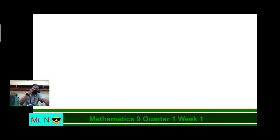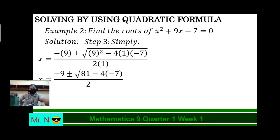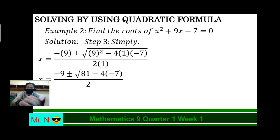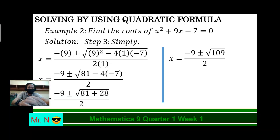Now in step number 3, we're going to simplify it. So, negative 9 plus or minus — 9 squared is 81, and negative 4 times 1 is negative 4, times negative 7, all over 2 times 1 is 2. Simplify further: we just multiplied negative 4 by negative 7, and that is positive 28. So we have negative 9 plus or minus square root of 81 plus 28, all over 2. Combining 81 and 28 by addition, we have negative 9 plus or minus square root of 109, all over 2.